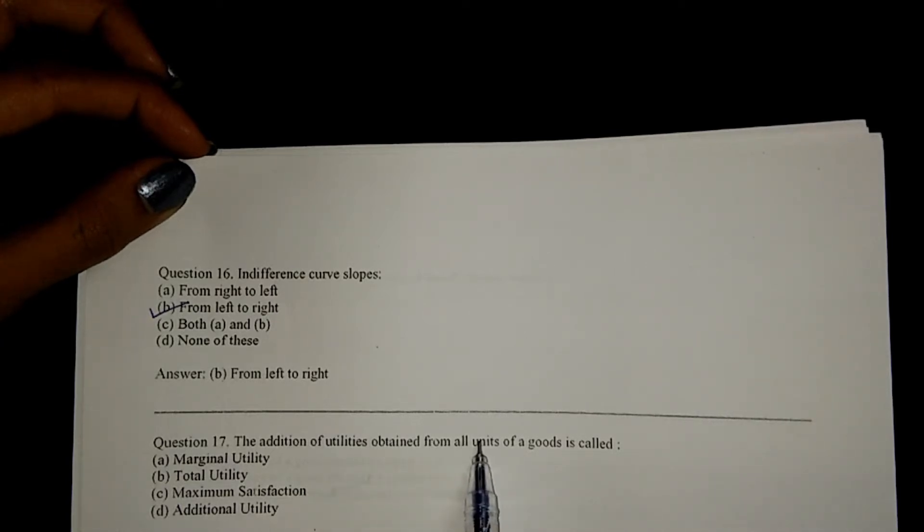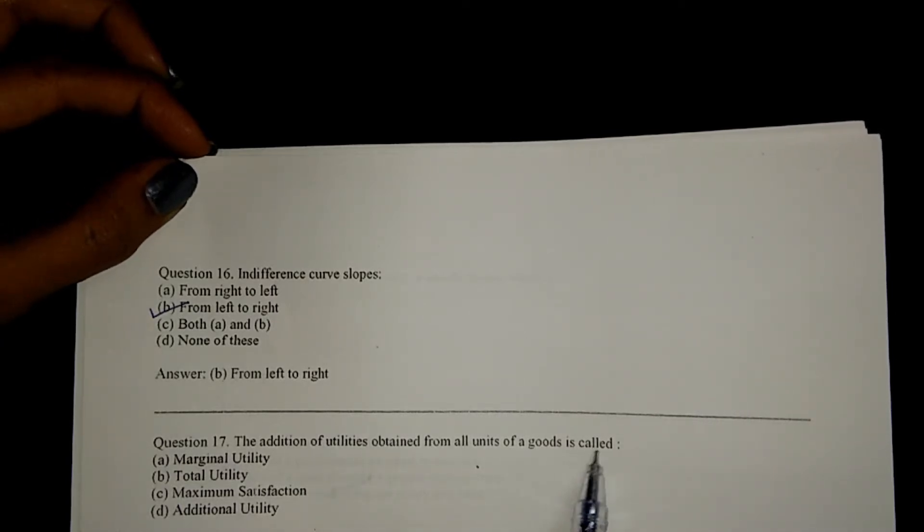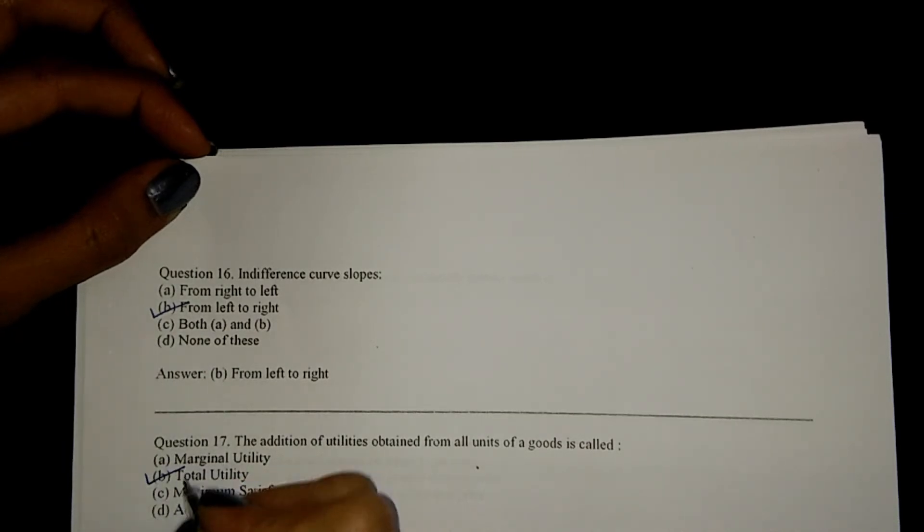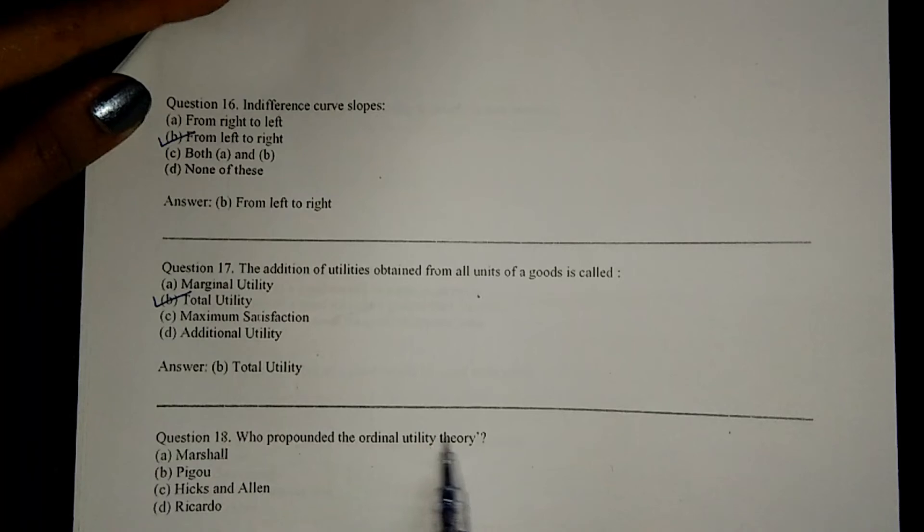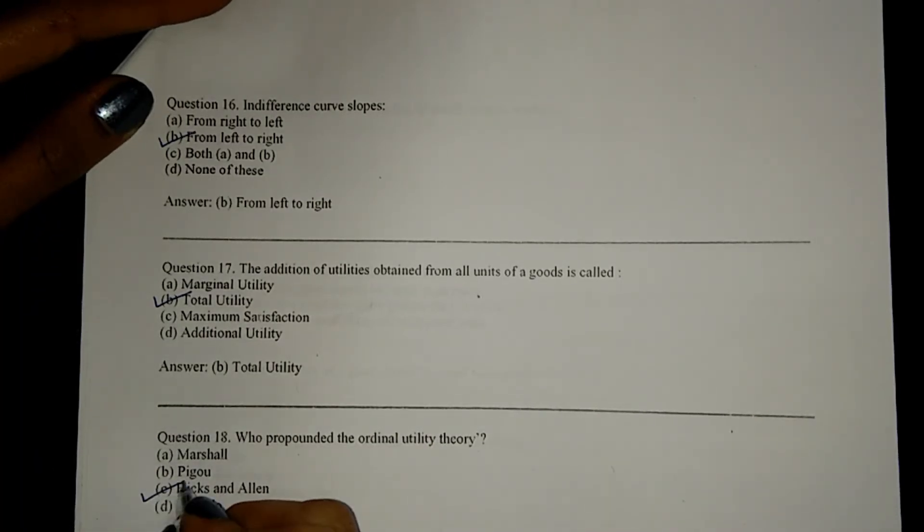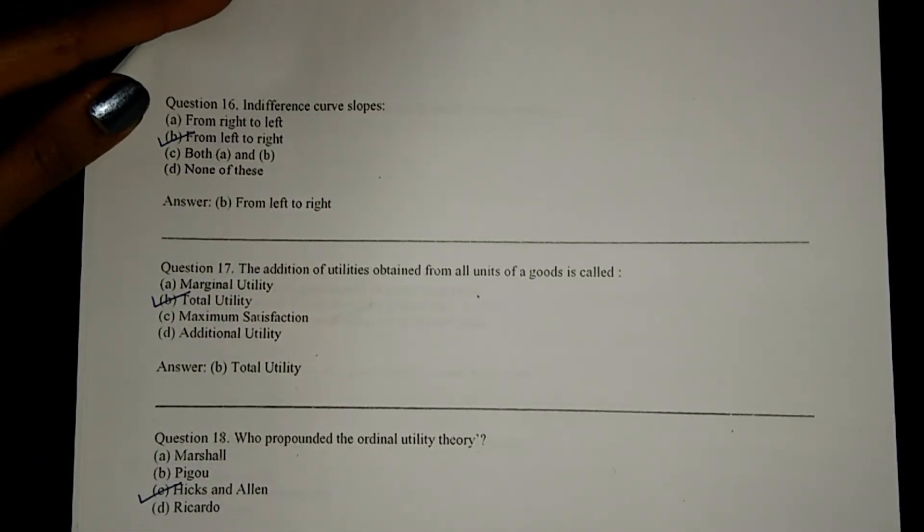Next, the addition of utilities obtained from all units of all goods is called B, total utility.